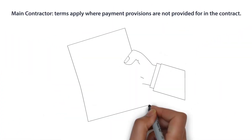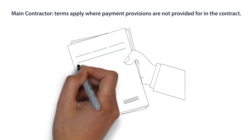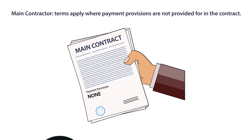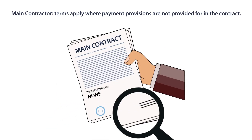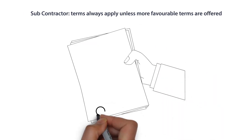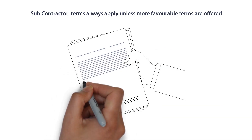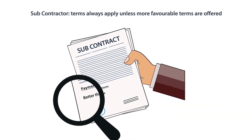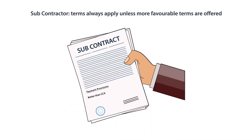So, for example, if you are a main contractor, the Act's payment terms apply where payment provisions are not provided for in the contract. If you are a subcontractor, the CCA's payment terms always apply unless more favourable terms are offered to the subcontractor.